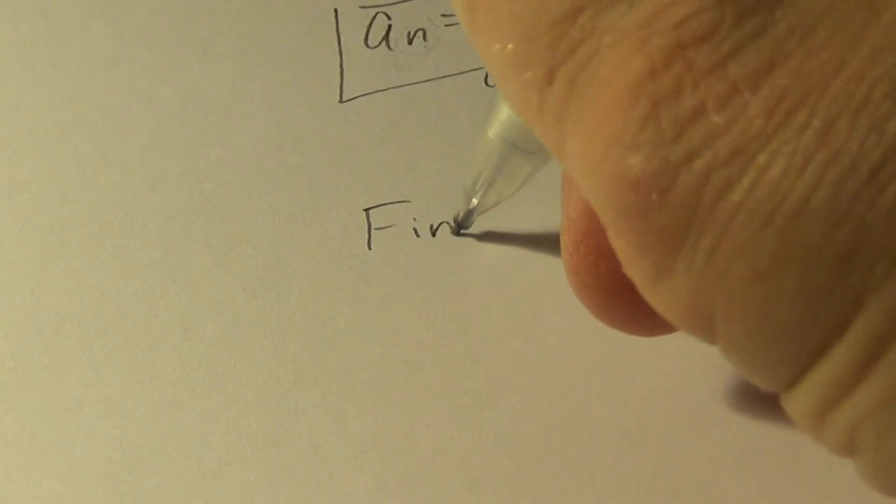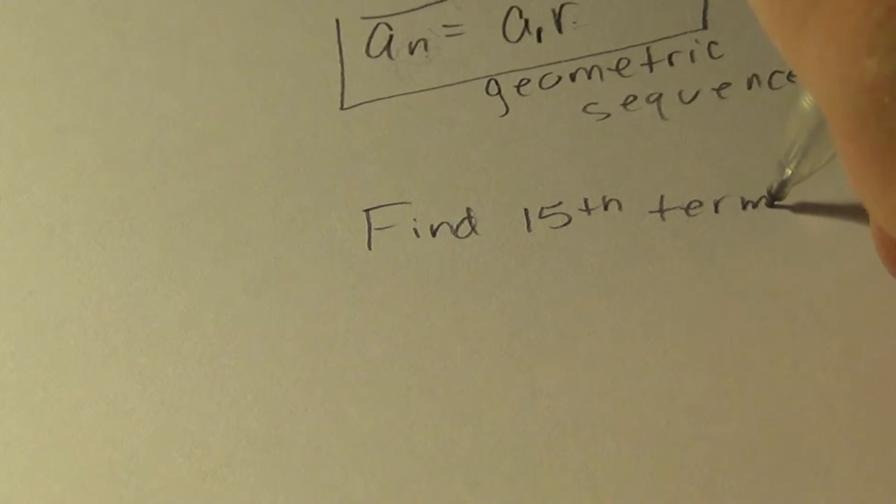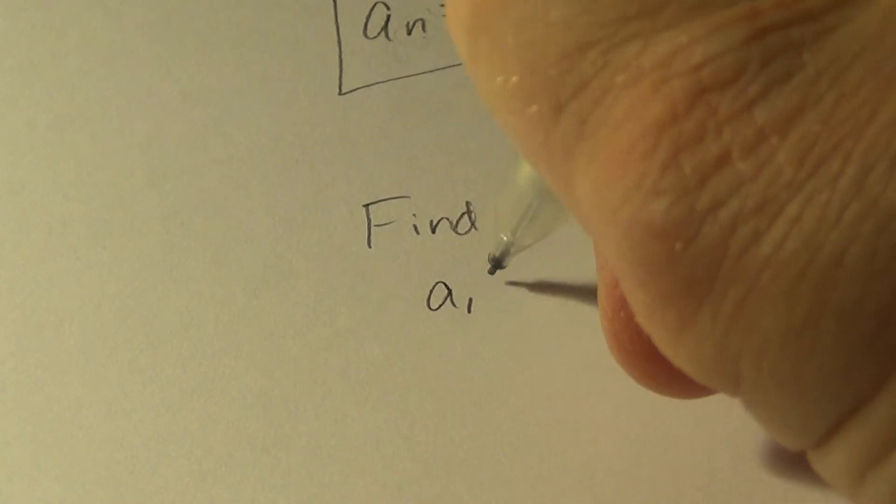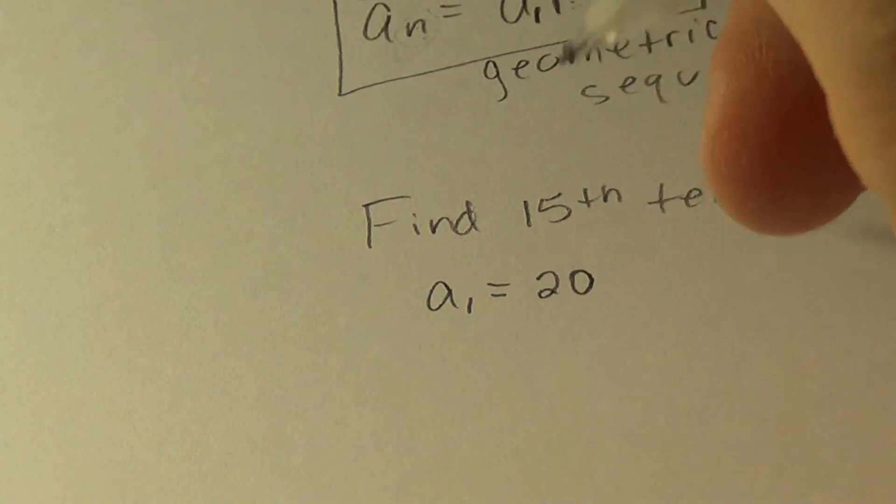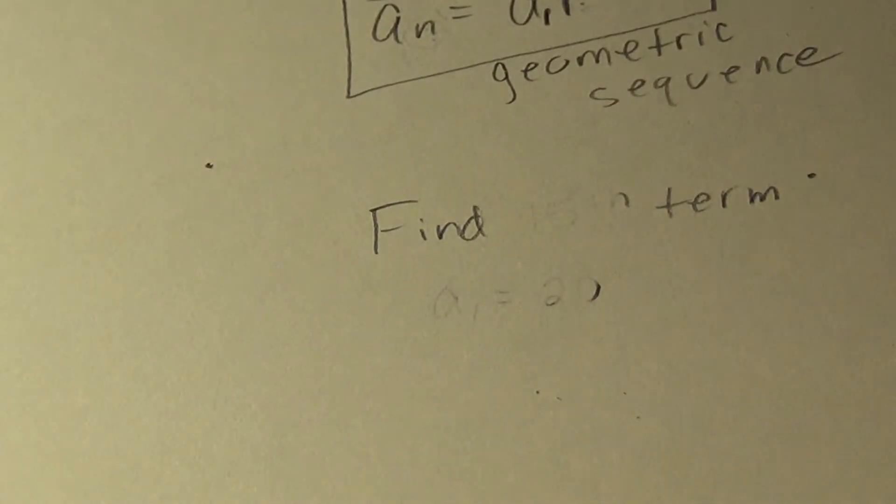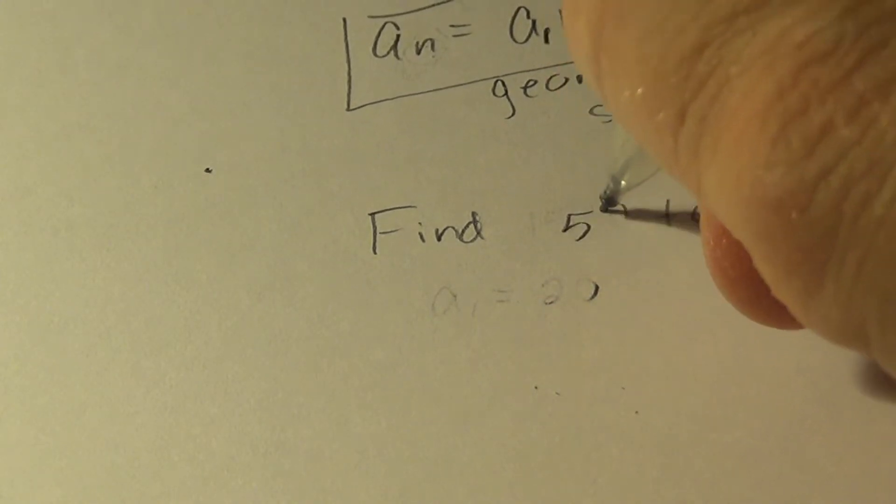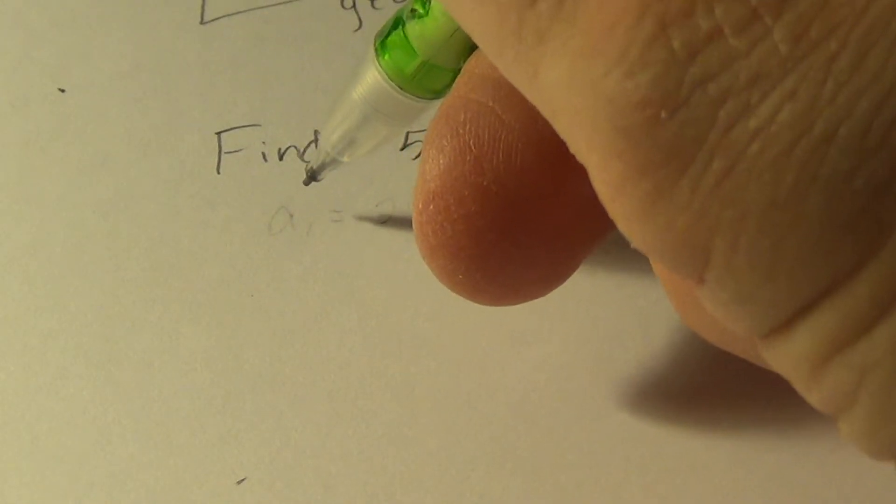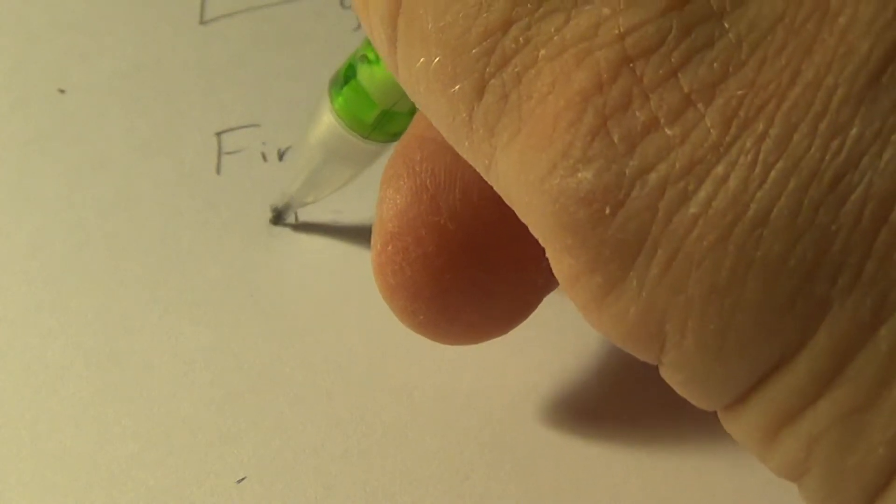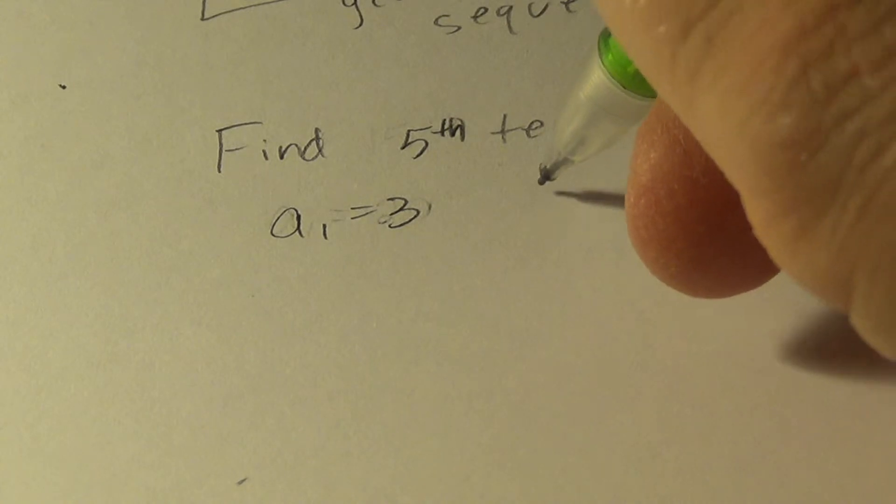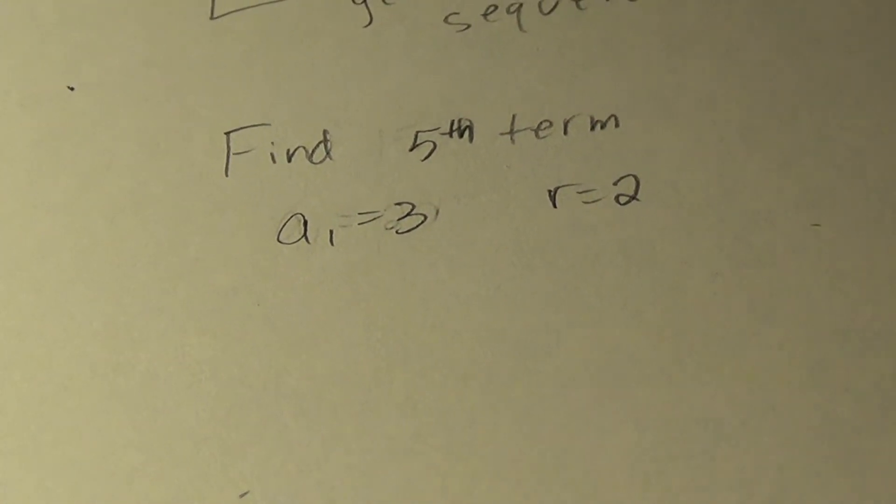So let us look at an example. Let's find the fifth term of this geometric sequence. And I don't want you to just generate it, which you could with five terms, it's not that difficult or time consuming, but let's just get practice using the formula. So A sub one, the first term is given, is three. And the common ratio is two.